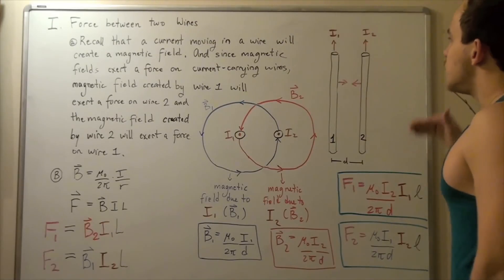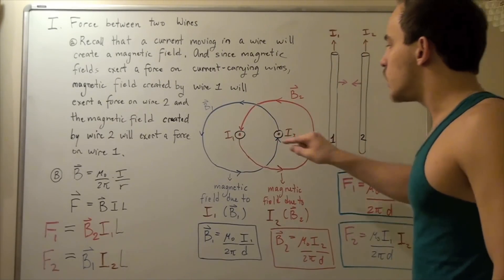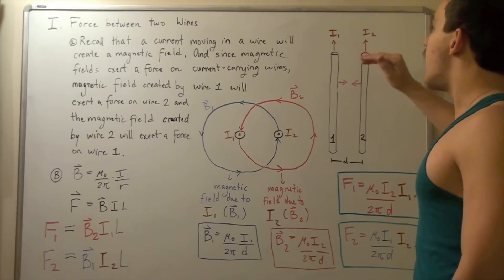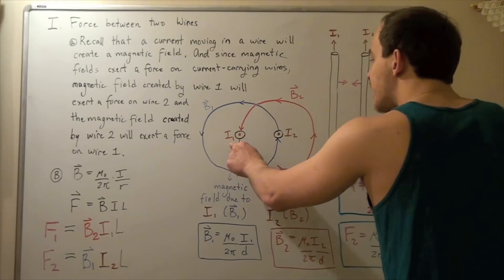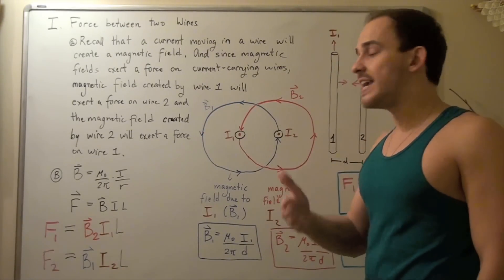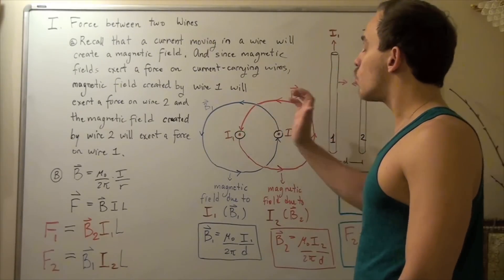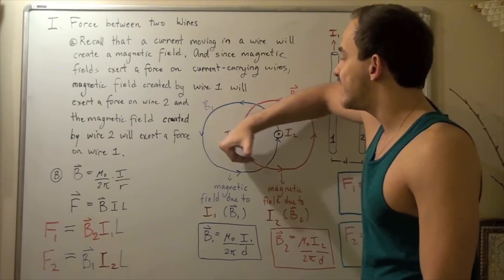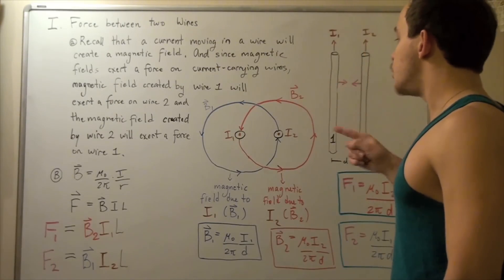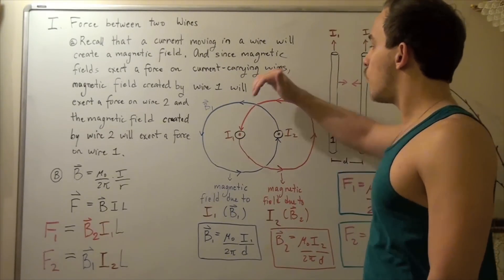Let's find the directions of our magnetic fields by looking at the aerial, or top-to-bottom, view of the picture. In this view, the circle with a dot means the currents are coming out of the page — which makes sense since both currents are going upward. Using the right-hand rule, with the thumb pointing in the direction of current, we find the direction of B1. Similarly, applying the right-hand rule for wire 2, B2 also circles in the same rotational sense.